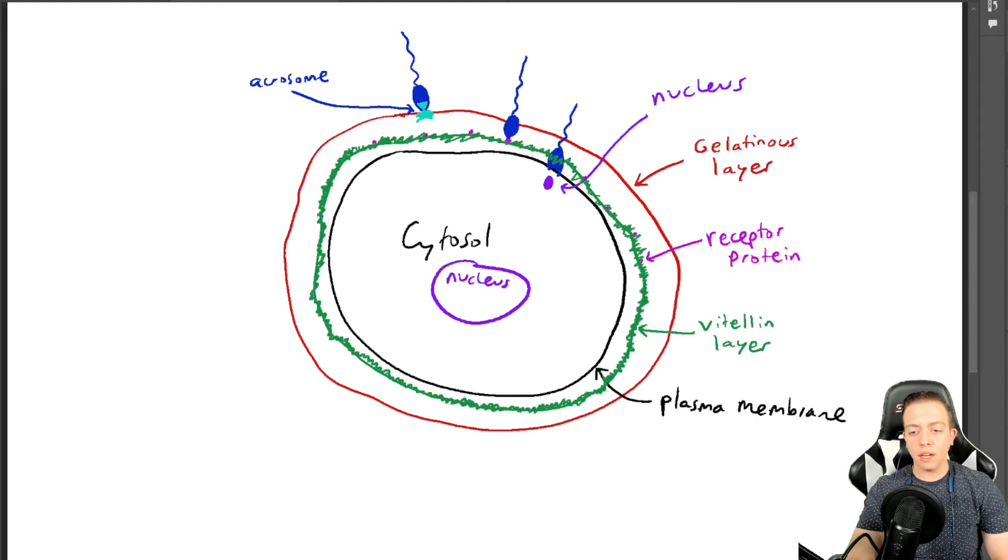But sometimes you have sperm that are fertilizing at the same time, and you don't give the vitellin layer a chance to become impermeable and separate from the plasma membrane. So in that very rare case, what happens when you have fertilization by two sperms?